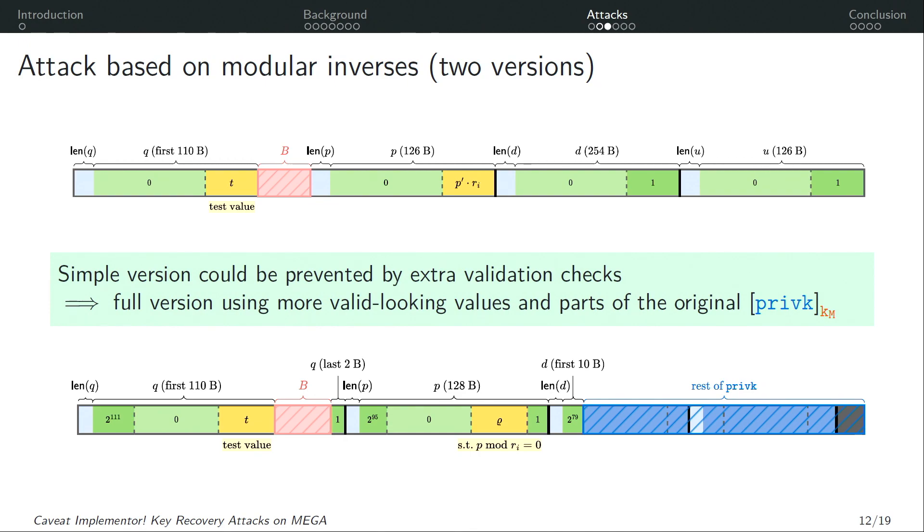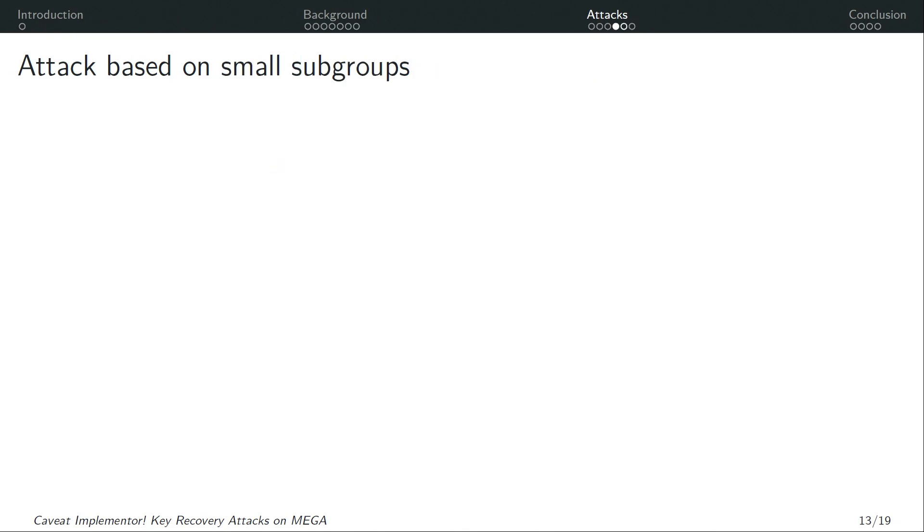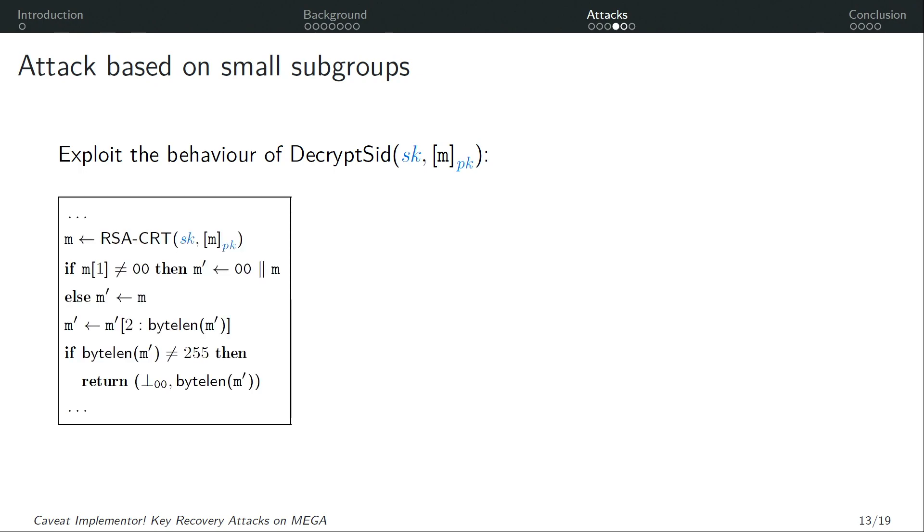One issue is that this version could still be prevented by adding yet more validation checks for example just a length check on these fields. So we also develop a full version which uses more valid looking values and parts of the original privkey ciphertext. But the attack mechanism is essentially the same. Now our second attack is a small subgroup attack which is targeting the same goal as the first one. But now we are exploiting the behavior of the RSA decryption function. This is an excerpt from the code and it does the following. So you can see that there is a conditional statement depending on the value of the second byte of the plaintext. And this was in the code only explained as a legacy padding check.